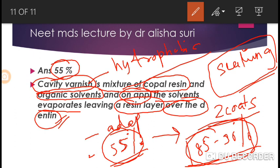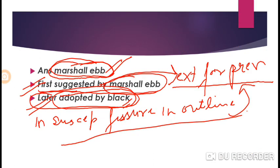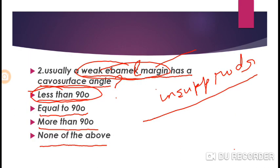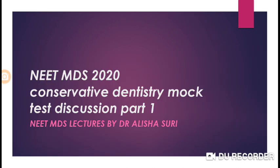Remember these values: 55% for one coat and 85 to 90% for two coats. Dentine bonding agents are also recognized as dentine sealing agents and can be used as substitutes for cavity varnish. That's all for today's video. Part two of this series will cover more important questions from conservative dentistry. Please like, comment with your views or queries, and you can also email us at dentehub1118@gmail.com. Take care, bye bye, and best of luck.